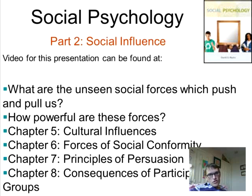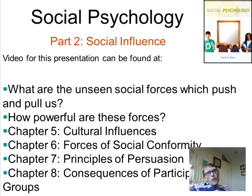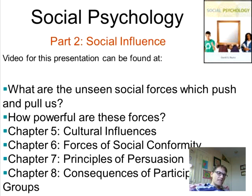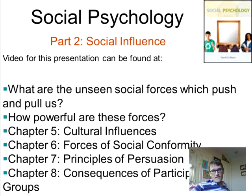Today we're going to start on part two of the book. This is a pretty interesting part because this entire unit — chapters 5, 6, 7, and 8 — all share a common theme: even when we believe that we are making our decisions and choices, we're usually being influenced by outside factors. What are the unseen social forces which push and pull us? Not just social — we'll talk about some biological forces too. There is no such thing as somebody who is separated from the rest of the world.